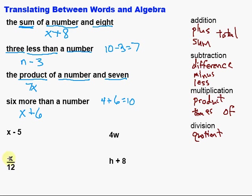Over here, we have x over 12. Well, that would be x divided by 12, or the quotient of x and 12.